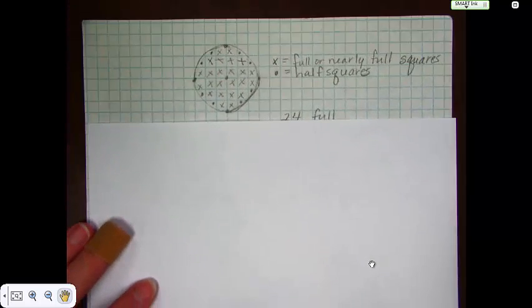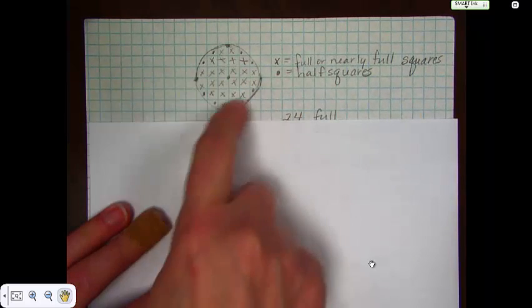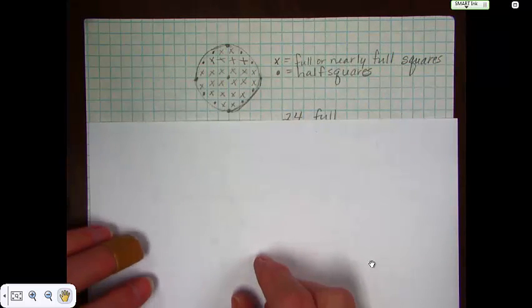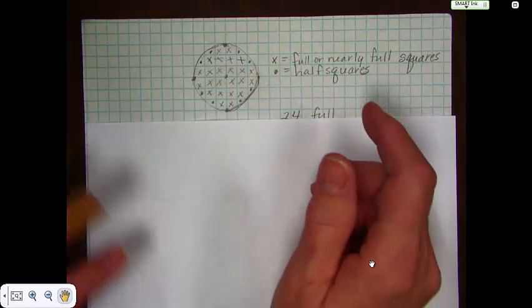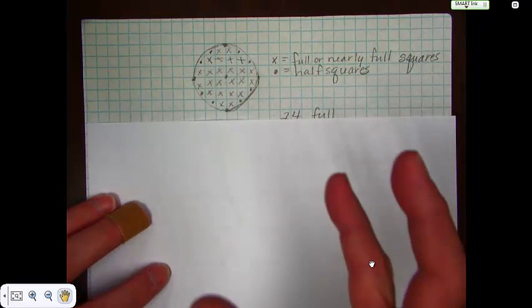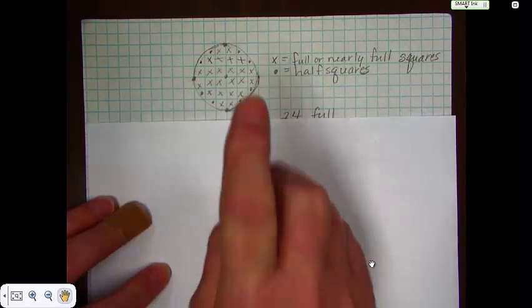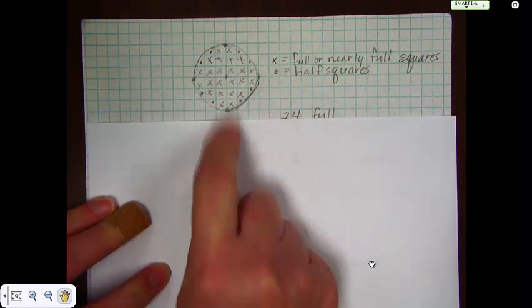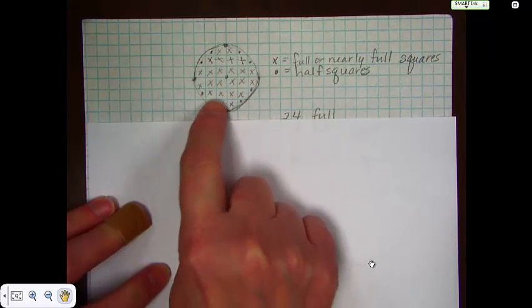So here's a drawing. If you look in your text, you'll see this drawing. But I thought this is kind of nice to have it right in front of you. So here's a caster. The caster is six inches in diameter. In this case, these happen to be centimeter blocks, so it's not quite the same as inches, but we're using it for illustration. If this is six across, then I went through and I marked all of the full or nearly full squares with x's.